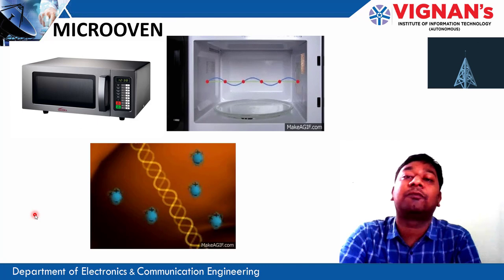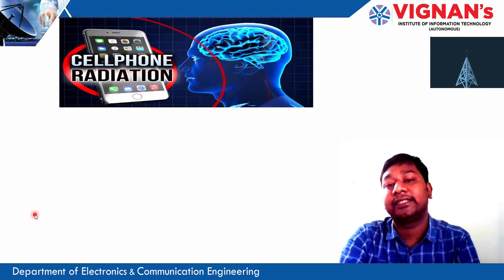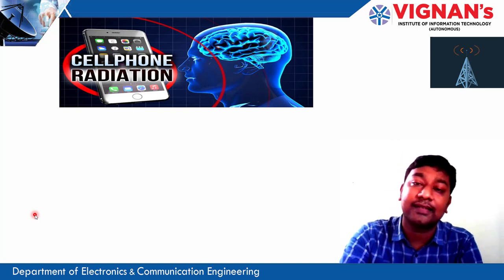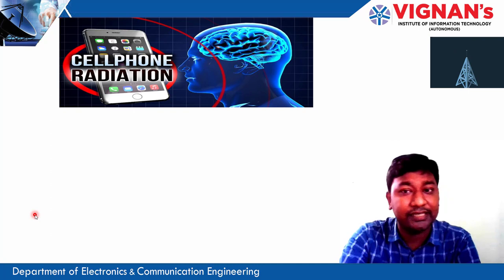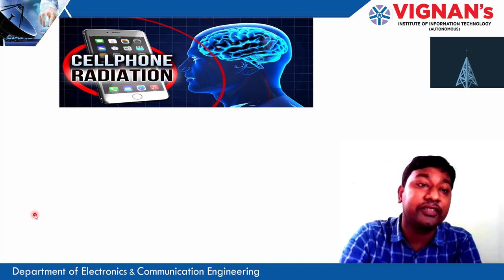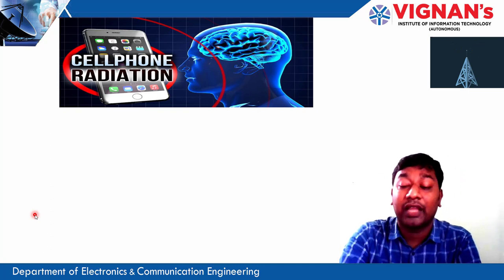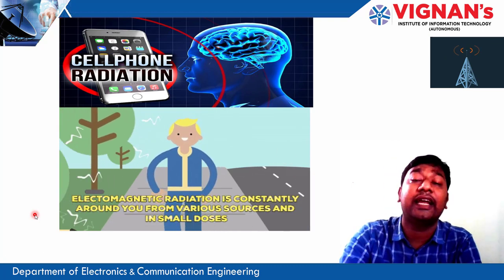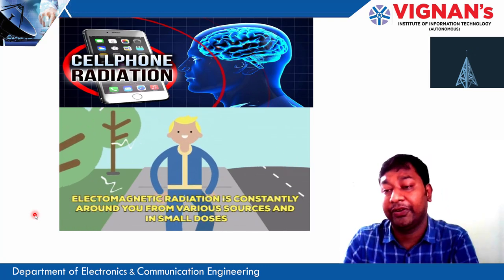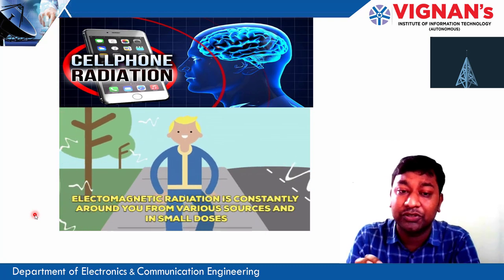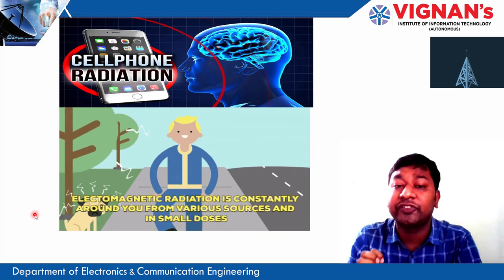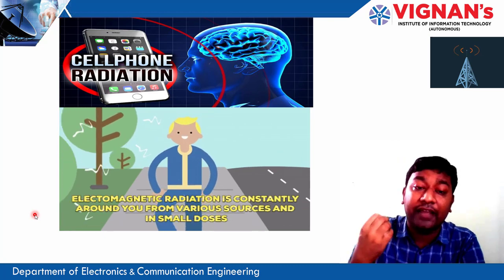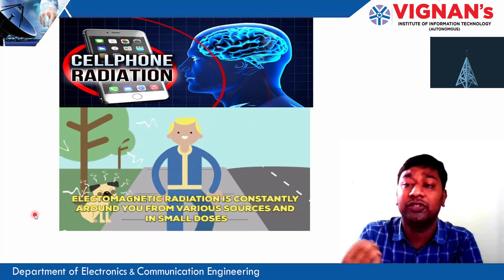Coming to the effects of microwave in our daily life — it comes under cell phone radiation. Electromagnetic radiation or cell phone radiation affects our human life. Nowadays the number of cancer patients is increasing day by day due to the wide use of cell phones. We receive electromagnetic radiation constantly from various sources in small doses, but if we increase the time period — say we receive one watt daily throughout 24 hours — then the amount of energy received in our body is very high, which increases the heat of the body and affects different cells and tissues, which causes cancer.